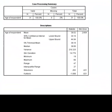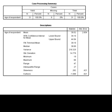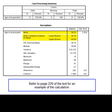In the output, we are provided with measures of central tendency, dispersion, and shape. However, what we are interested in for this tutorial is the mean and the 95% confidence interval. SPSS provides us with the standard error that is used to calculate the lower and upper bound of the confidence interval. Since the population standard deviation is unknown, the standard error is calculated as the standard deviation divided by the square root of the sample size. The lower and upper bound of the confidence interval are then calculated as the sample mean plus or minus the critical value of t, which at 30 degrees of freedom is 2.042, times the standard error of the mean.